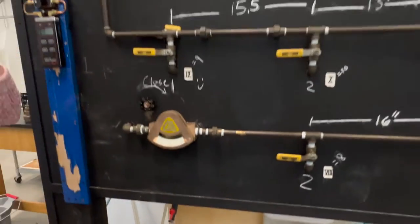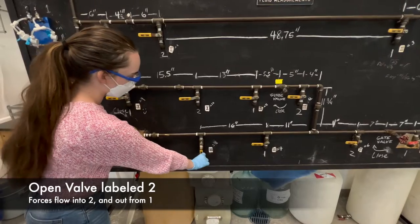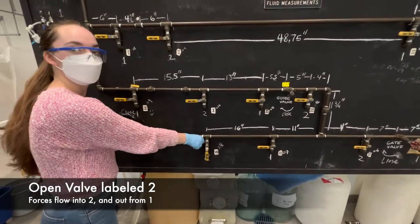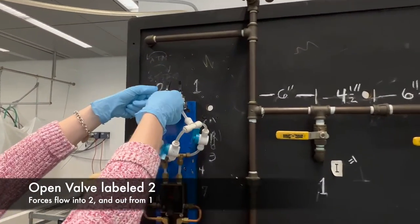So that means when we open up a valve two, we're going to be sending water in through pipe two. And all the pressure buildup is going to cause flow to go in through two.